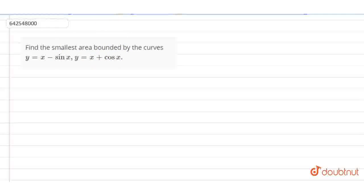So now, let's try to solve this question. We are having two equations. y equals x minus sin x, consider this to be equation number 1. And y equals x plus cos x. Consider this to be equation number 2.